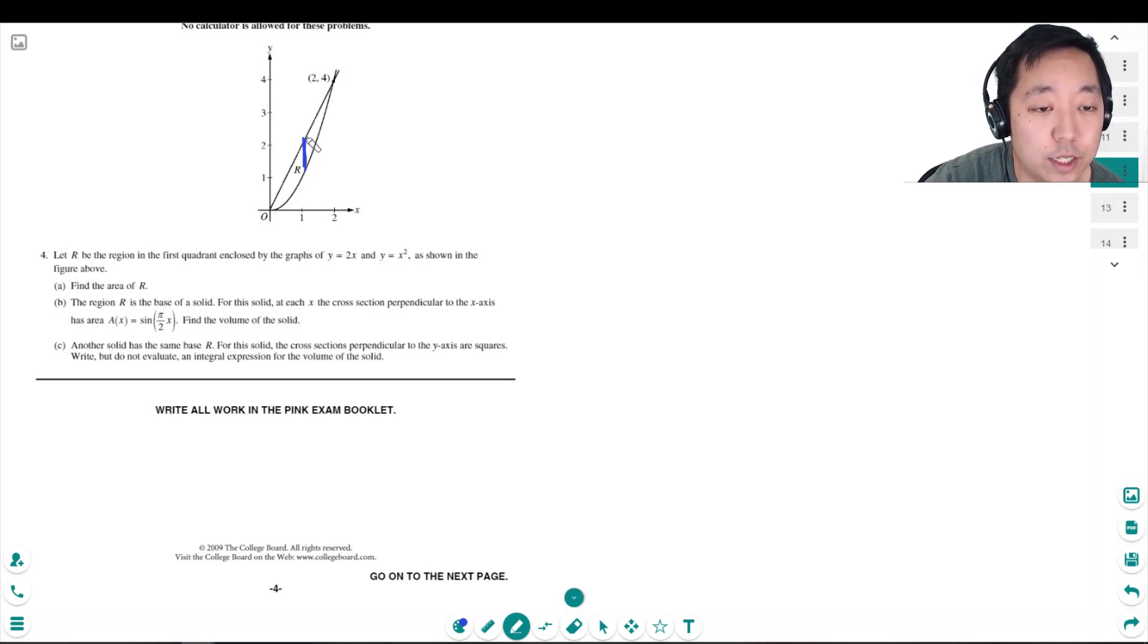I'm gonna add up rectangles with an integral to get this area. What's the height of each rectangle? It's this y value minus this y value. So the height of this rectangle is the top function, which is 2x, minus the bottom function, which is x squared. It's the y value because this is y equals x squared, this is y equals 2x, and the difference in the two y values is the height.